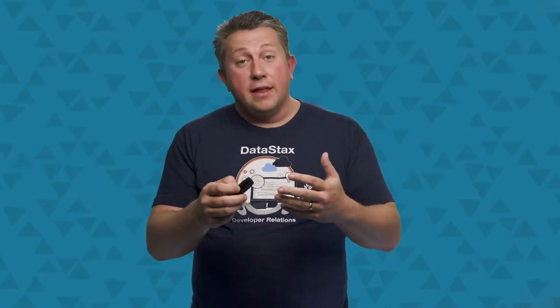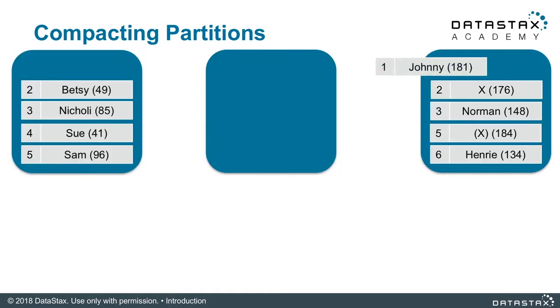That's just something to be aware of as we compact these two partitions together. For example, we have Johnny at the top there with a timestamp of 92. The corresponding value in the SSTable on the right is also Johnny, keyed off of the one, with a timestamp of 181. Since 181 is greater than 92, the Johnny on the right is the newest value. When you do a read, Apache Cassandra will return the value on the right because it has a later timestamp than the Johnny on the left.